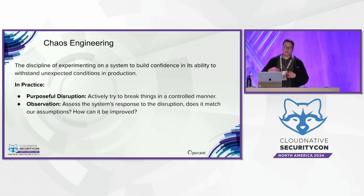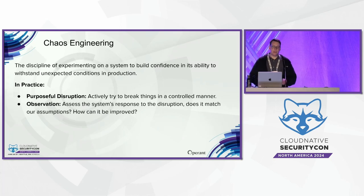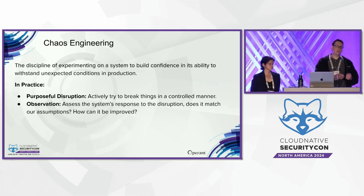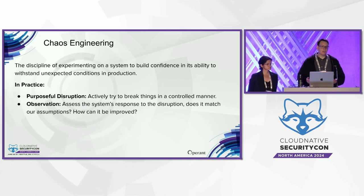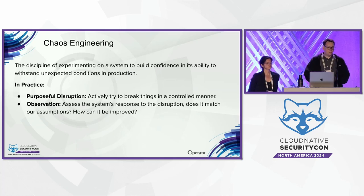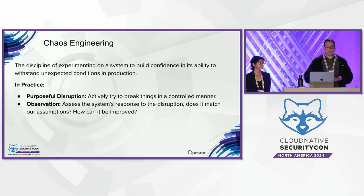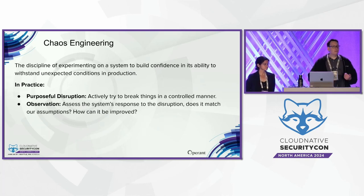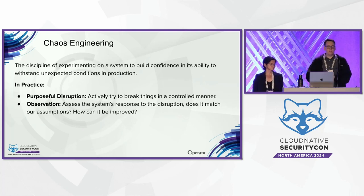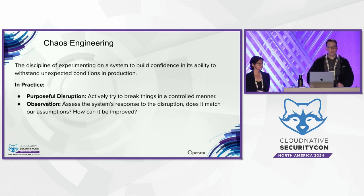Chaos engineering is the purposeful introduction of faults into a system to test its reliability. A lot of people picture an engineer randomly breaking things, but it's much more scientific than that. For example, you might form a hypothesis like 'my database cluster can survive a single node going down,' test that as close to production as possible, take that node down, and check the behavior. The real power of chaos engineering is testing close to production to get real-life scenarios. Then you feed the learnings back into your system to improve reliability.